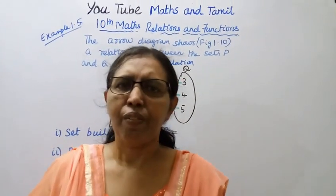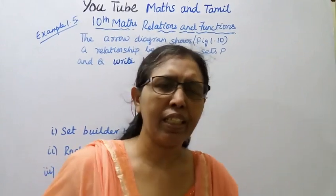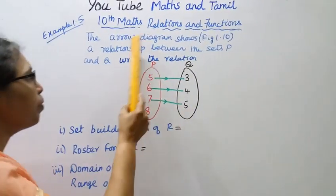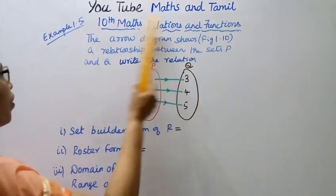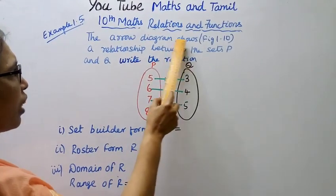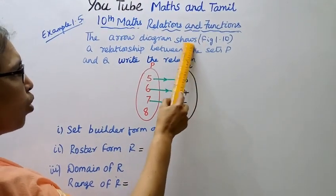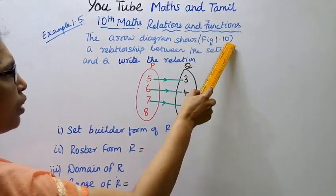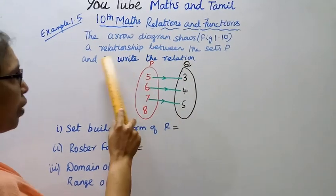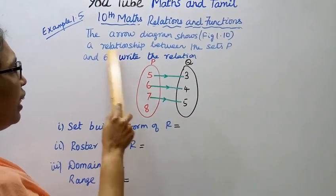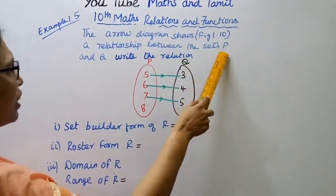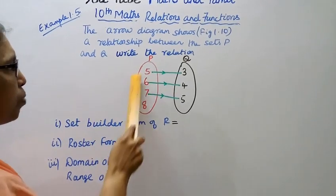Hello students, welcome to Max and Tumult channel. Relations and Functions, Example 1.5 - the arrow diagram. Figure 1.10 shows an example of the relationship between the sets P and Q.